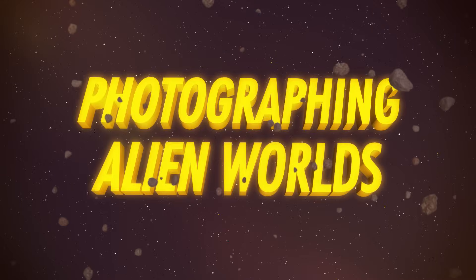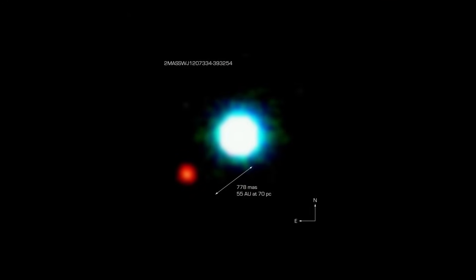All these planets have been found using indirect methods. What about actually seeing them, getting photographs of them? That's hard, because planets are so faint. But it's not impossible. In 2004, the first picture of an exoplanet was released, 2M1207b,